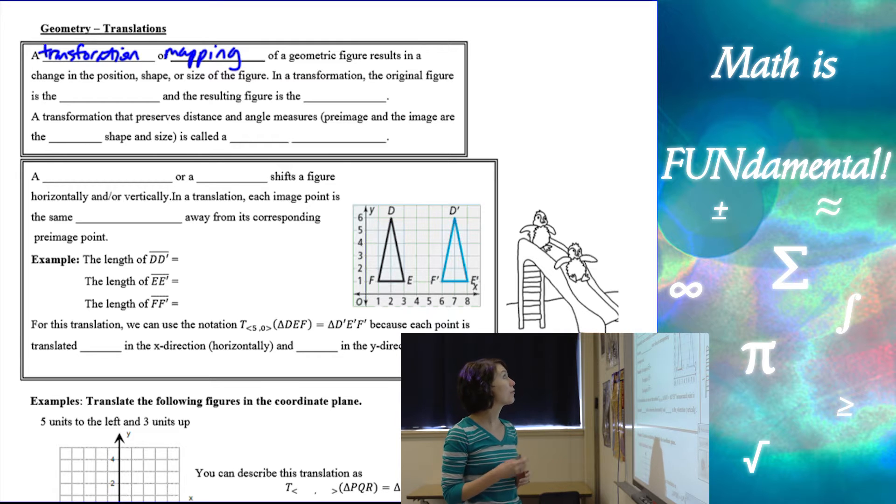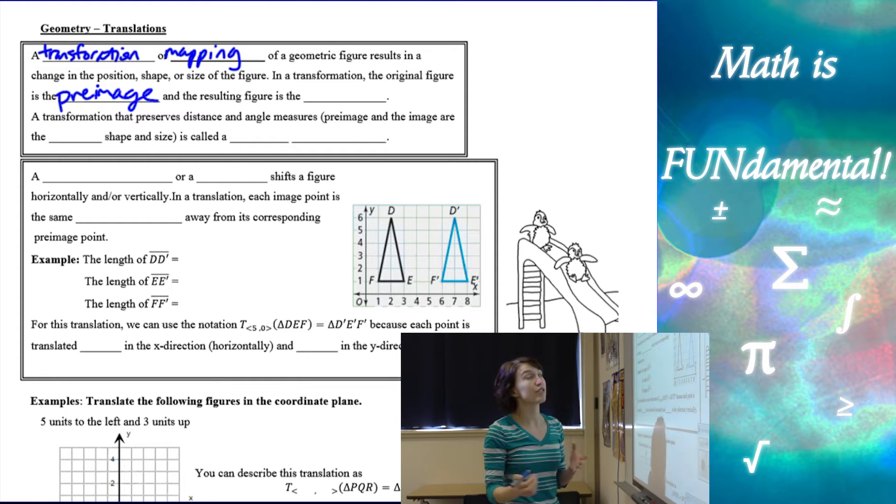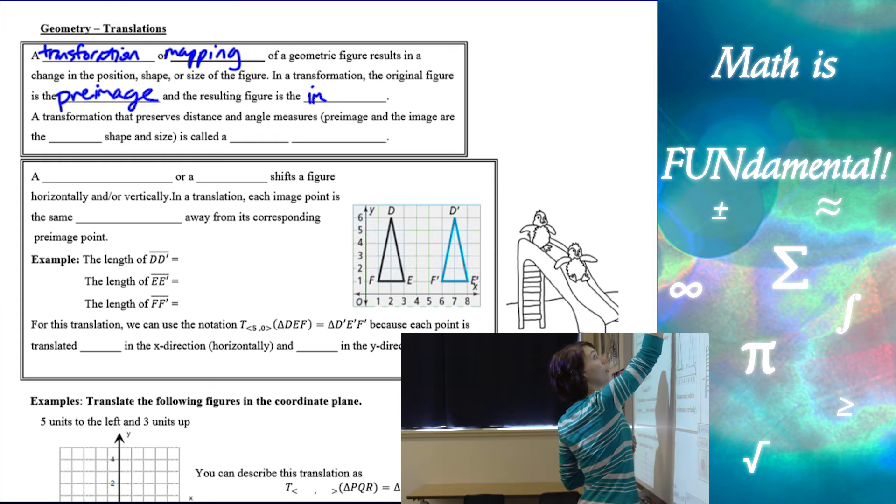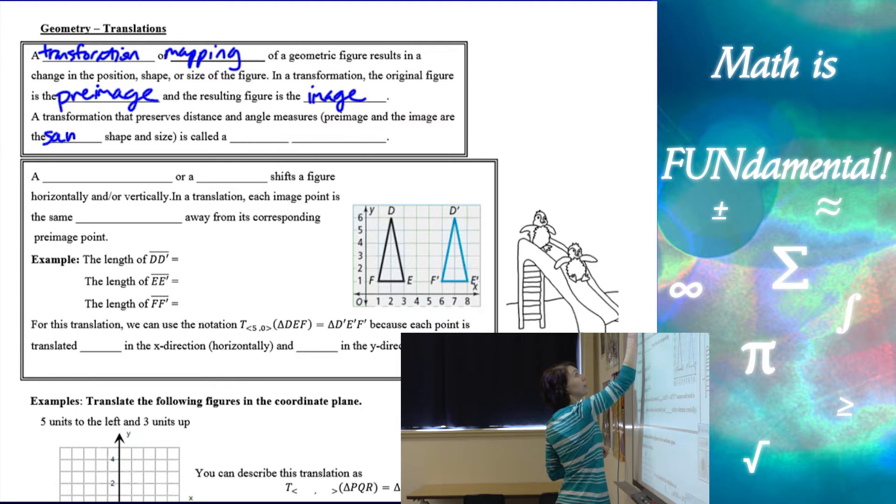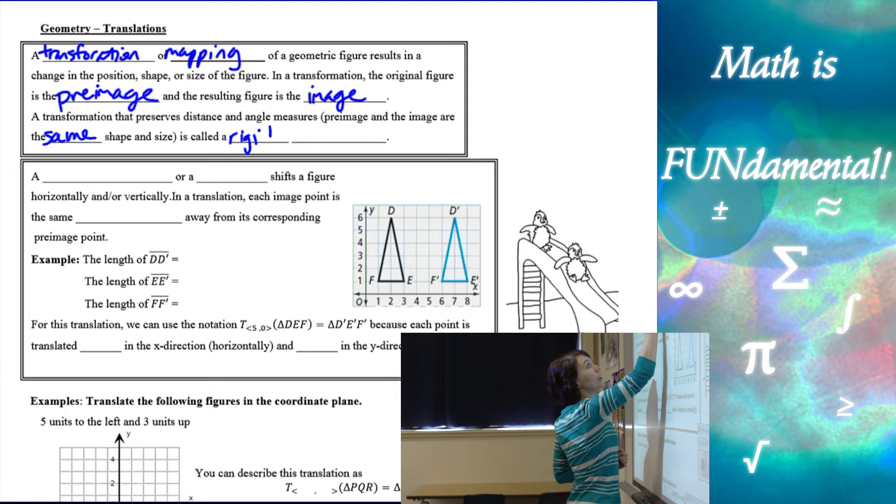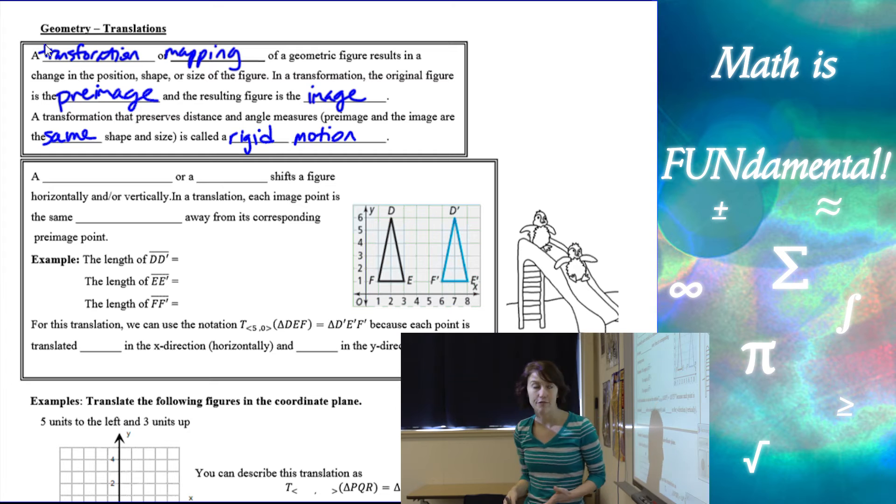A transformation of the original figure is always called the pre-image, and the resulting figure is what we call our image. And a transformation that preserves distance and angle measure, or in other words, the image and the pre-image are the same size and shape, is what we call a rigid motion.